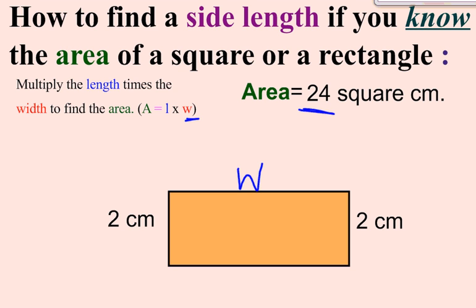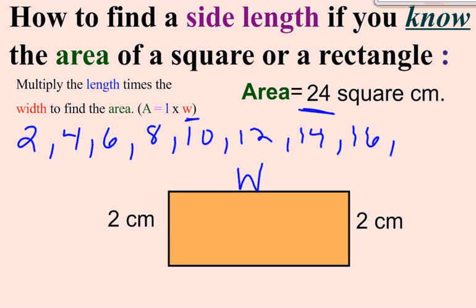We want to know what W equals. One strategy that the kids learned was they could use what they know about multiplication and keep multiplying the two until they get to 24, so they can skip count and see how many times they need to skip count. So they could say 2, 4, 6, 8, 10, 12, 14, 16, 18, 20, 22, and then 24.